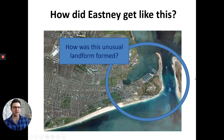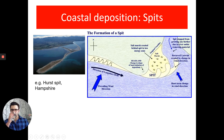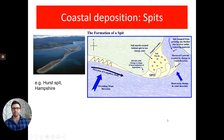The next question is: how did East Ney get like this? East Ney is an area of Portsmouth characterized by this rather unusual landform. It's all due to deposition. A spit is an example of a landform formed by transportation and deposition working in harmony — for example, East Ney spit in Portsmouth, or Hurst spit in Hampshire.